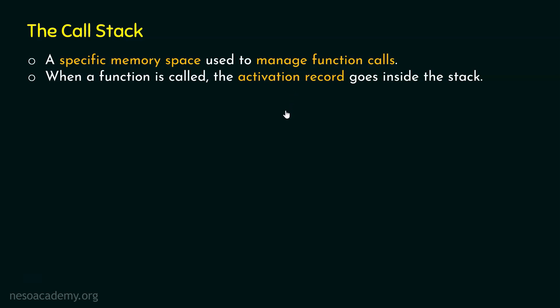So, from now on, we think of the activation record as a block of memory which contains these two pieces of information: the return address where the function should return after its completion, and the local variables of the function. Now, let's understand through an example how the call stack works. We will take a simple C program and understand what happens to the call stack when we execute that program line by line.